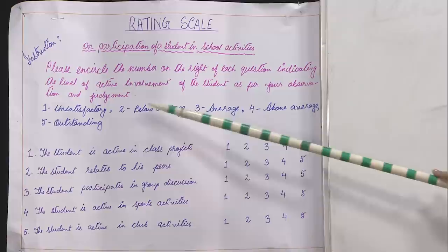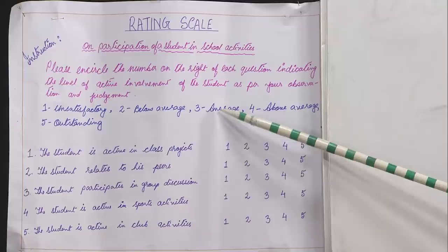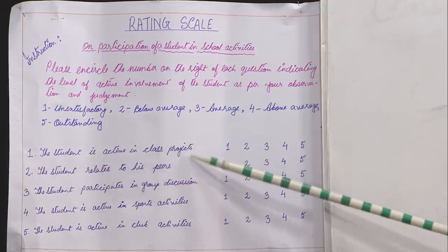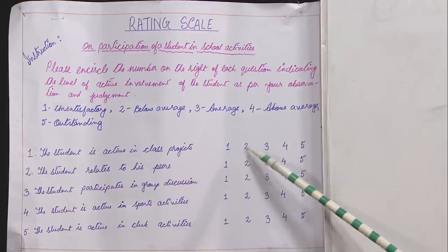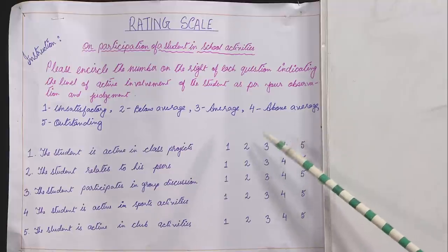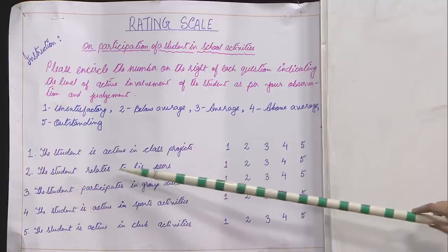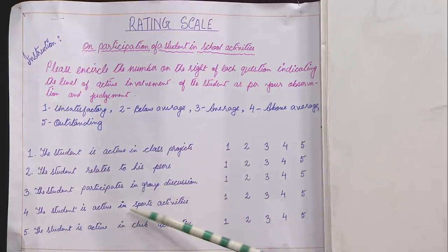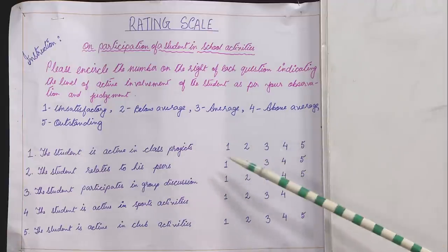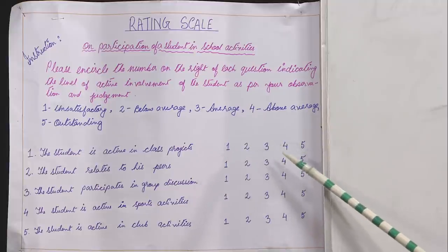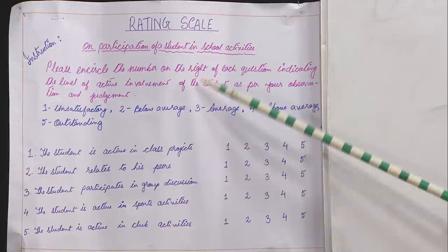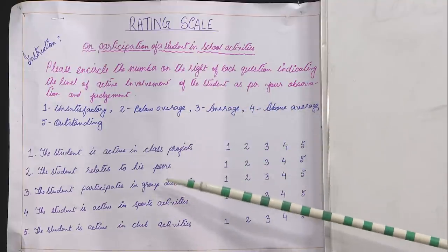The observer has to rate the student's activities accordingly. The activities listed include: the student is active in class projects, rated 1 to 5; the student relates to peers; the student participates in group discussion; the student is active in sports activities; and the student is active in club activities. You can also use a three-point scale. One will rate these activities using 1, 2, 3, 4, or 5, representing the corresponding performance levels. This way, a student's performance and activeness in school activities can be judged and rated through a rating scale.